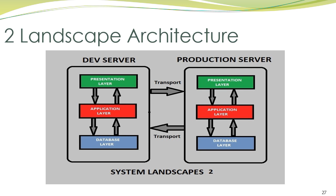The two landscape architecture is used to reduce manpower and the cost of maintaining servers. In this setup, there are only two servers: one development server and one production server. The development server also acts as the quality server. Once everything is done, it is transported to the production server. This is called system landscapes. Thanks for watching.